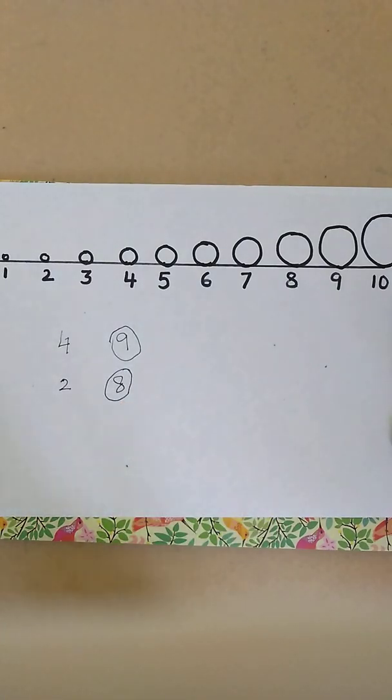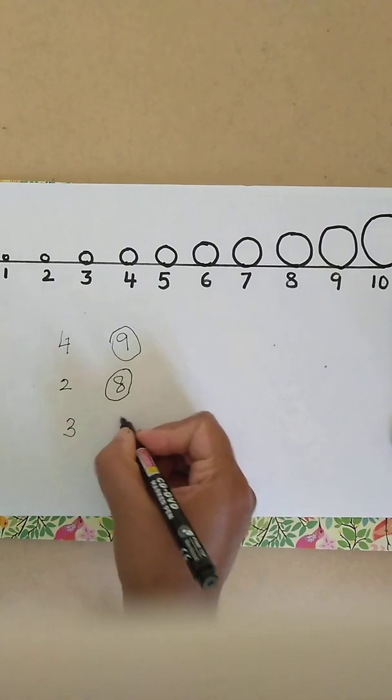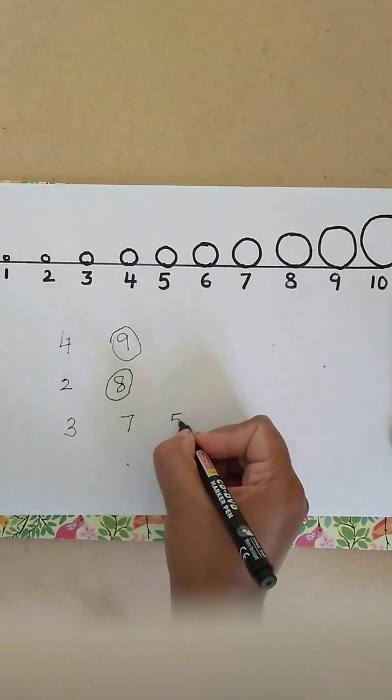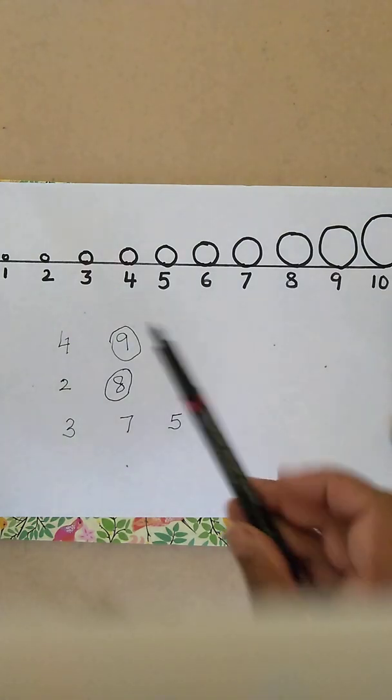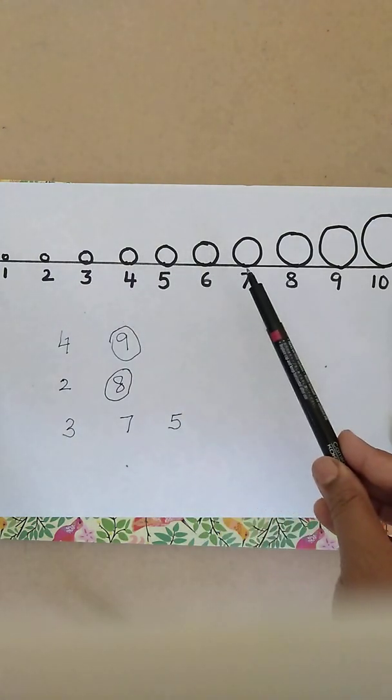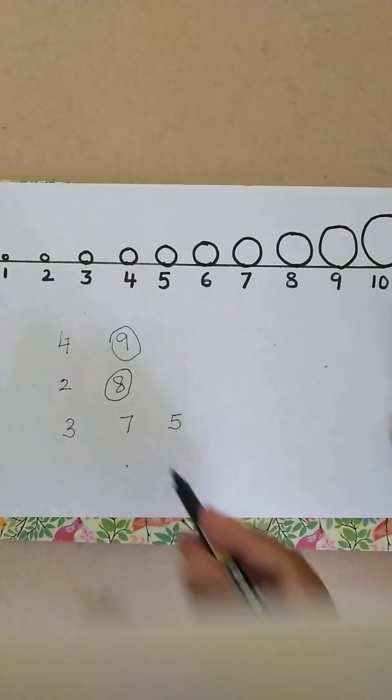If you feel your child is comfortable, you can try giving 3 digits: 3, 7, 5. Ask the child to look into the number line: 3, 7, and 5. Which has the biggest circle? 7. So 7 is the biggest number.